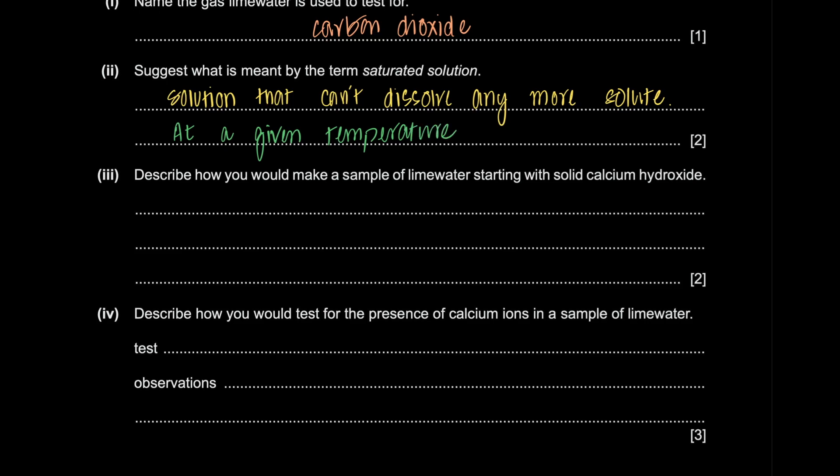Describe how you would make a sample of lime water starting with solid calcium hydroxide. This doesn't seem to be too hard. Add excess amounts of calcium hydroxide into water. And the next thing you do is filter the excess. Right? And you're done.